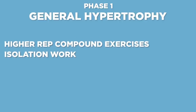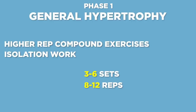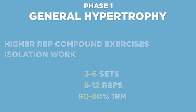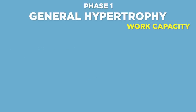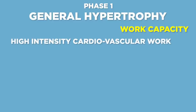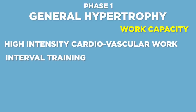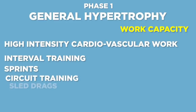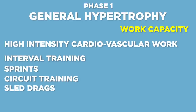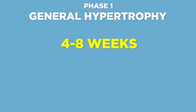In phase 1, athletes will focus on two aspects. The first is higher rep compounds and isolation work. Generally this will be between 3 and 6 sets of 8-12 reps, depending on the exercise range, and the percentages of the athlete's max will be approximately 60-80%. The second area is work capacity. High volume strength training will cover some of this, but we want to ensure our resilience against high training loads later in the phases. Work capacity training consists of high intensity cardiovascular work like interval training, sprints, circuit training, sled drags, etc. Phase 1 will finish usually between 4-8 weeks, depending on the time available.